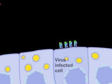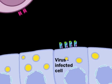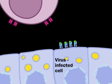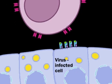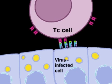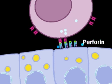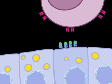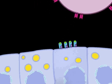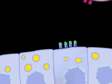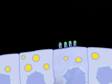When an activated cytotoxic T cell binds specifically to the displayed antigen, the T cell releases a protein called perforin, which perforates the plasma membrane of the infected cell, allowing water to enter and causing it to lyse.